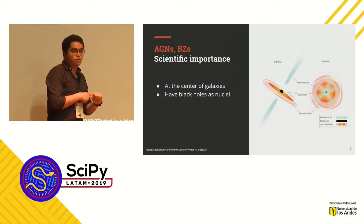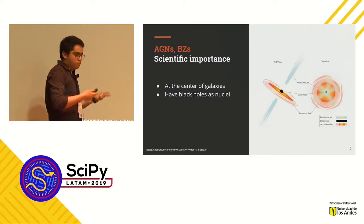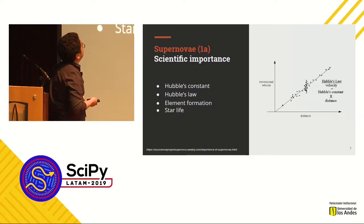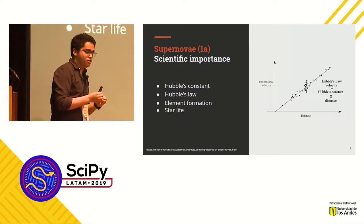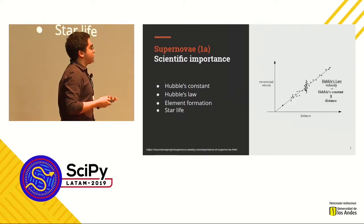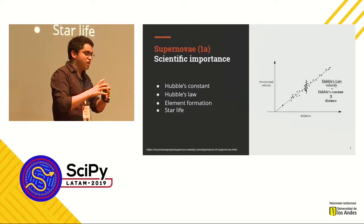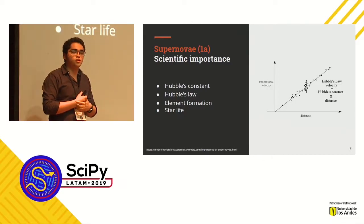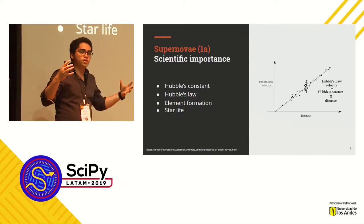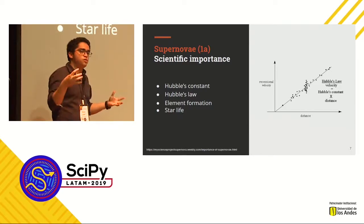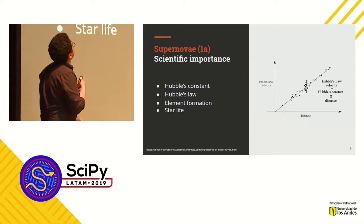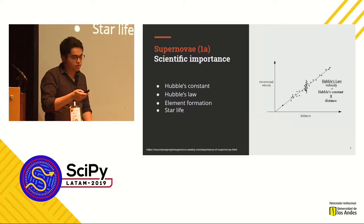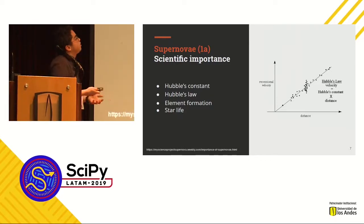AGNs are important for general relativity studies and black hole studies. And supernovae — Type Ia supernovae are essential to the study of the expansion of the universe because they are used as standard candles to measure it. Hubble's law, also known as the cosmological constant, is the rate at which the universe expands. The way we measure how fast the universe expands is by using Type Ia supernovae, so we need to find them to accurately measure the expansion of the universe. That's why we wanted to carry out this project.